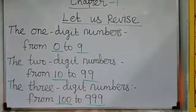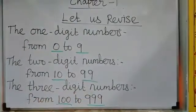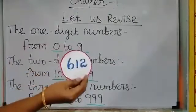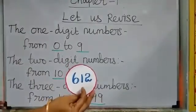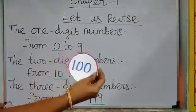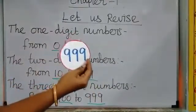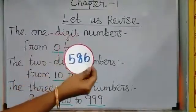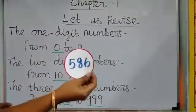3-digit numbers are from 100 to 999. For example, 612 — this number has 3 digits, so it is a 3-digit number. 100 is also a 3-digit number. 999 is also a 3-digit number. 586 is also a 3-digit number.